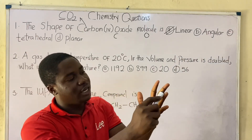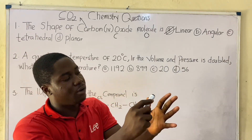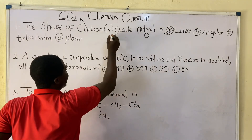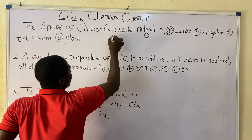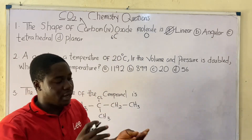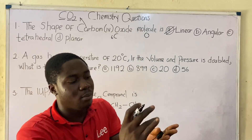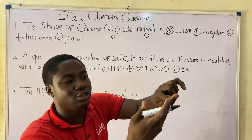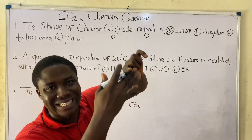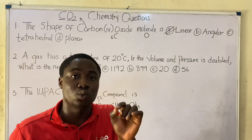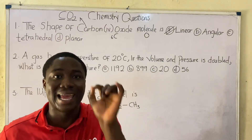Counting through the elements: hydrogen, helium, lithium, beryllium, boron, carbon — carbon is number 6. Continuing: hydrogen, helium, lithium, beryllium, boron, carbon, nitrogen, oxygen — oxygen is number 8.